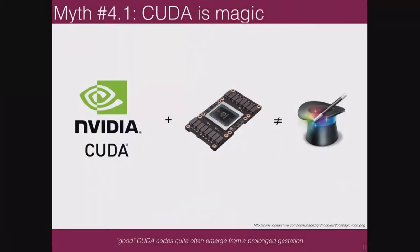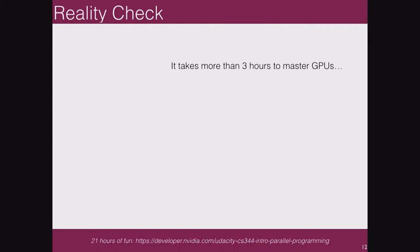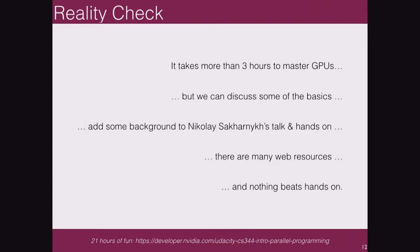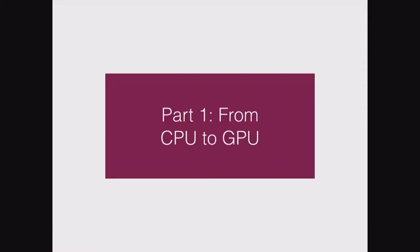Myth number 4.1: CUDA is magic. Even if you bend over backwards to write your CUDA code, there's no guarantee you're going to get anywhere near peak performance. It can take a great deal of psychoanalyzing the CUDA compilers and the architecture to get best performance. It takes more than three hours to master GPUs. We'll discuss some of the basics — there are many web resources, nothing beats hands-on. That's all opinion; your mileage may vary based on your own personal experience.